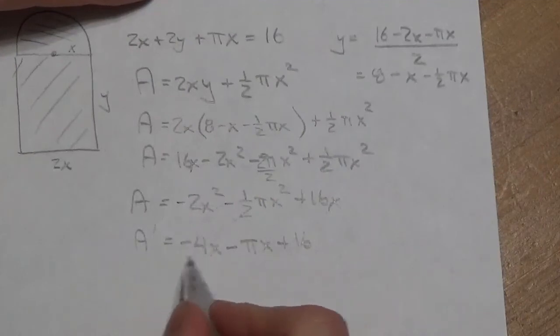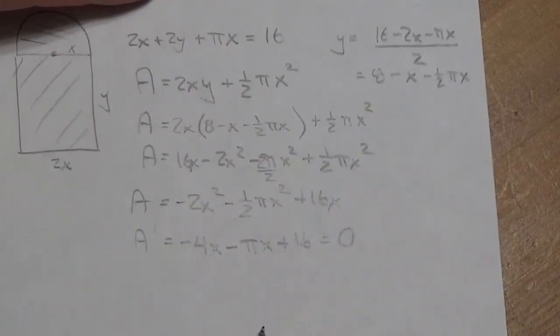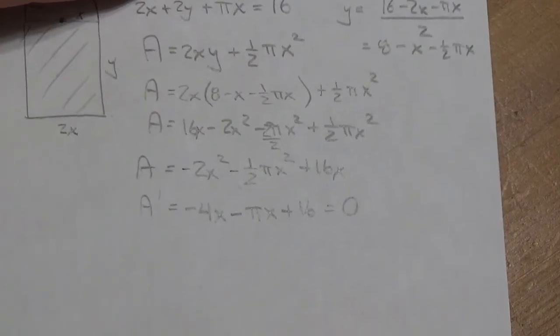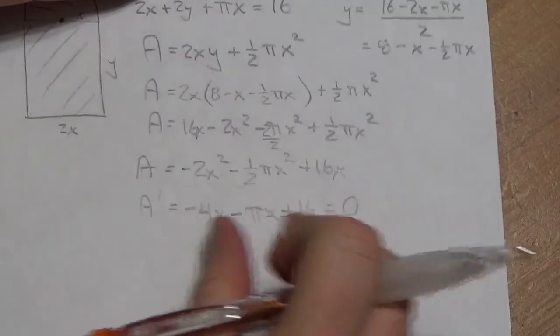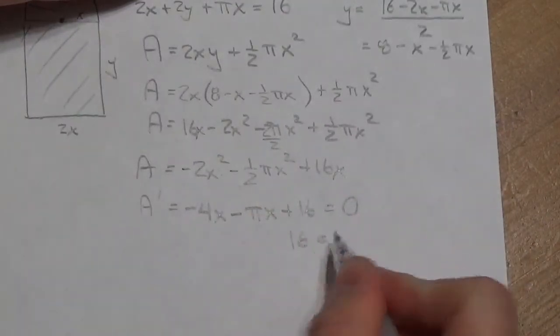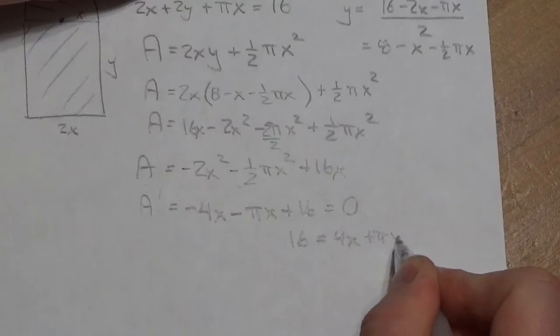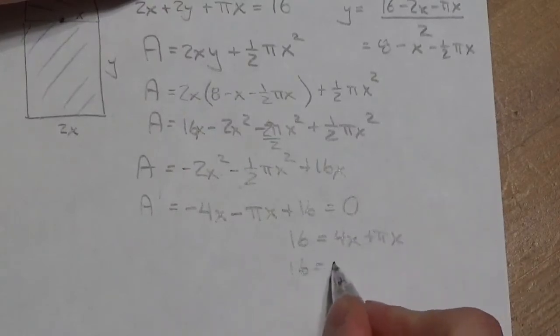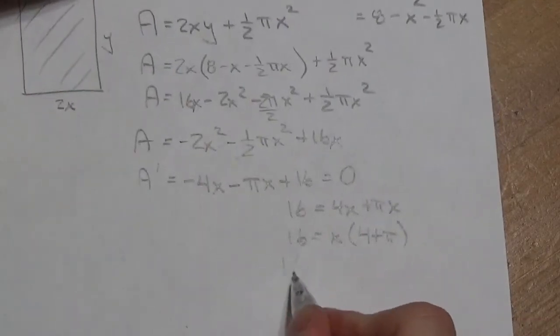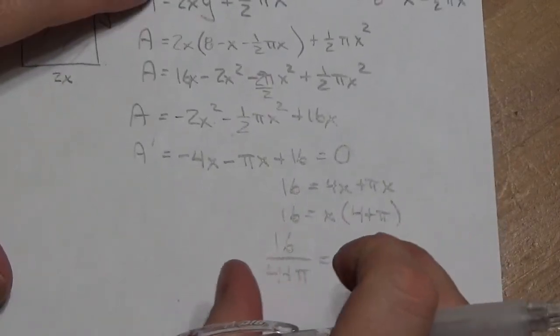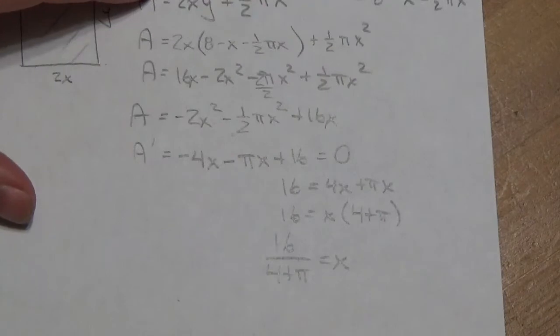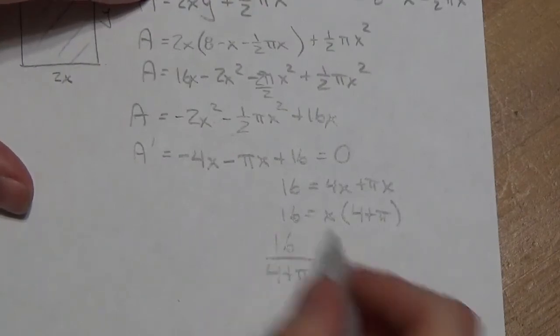Now, what you do here is we're going to let the derivative be equal to 0. Okay? Because we're looking for where the slope of the tangent is 0. It's horizontal. I am going to bring these two terms over. So, I will get 16 is equal to 4x plus πx. I will factor out the common x. And then divide. So, 16 over 4 plus π is equal to x. Alright. So, there's my value for x there.